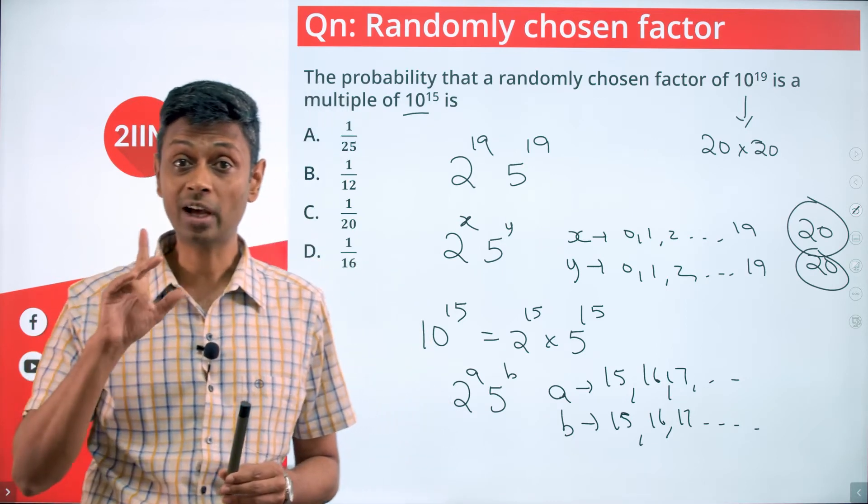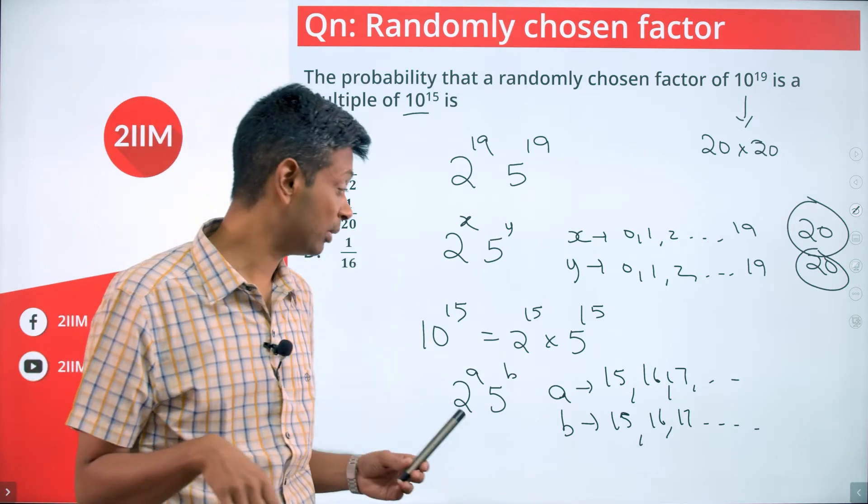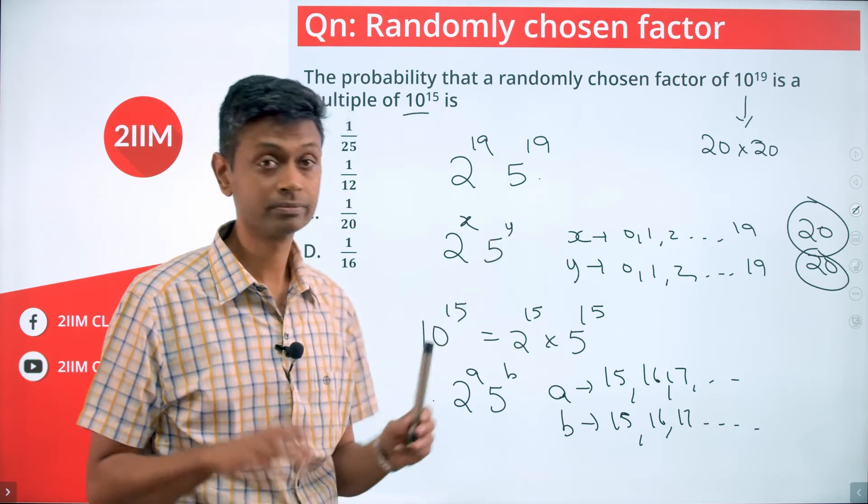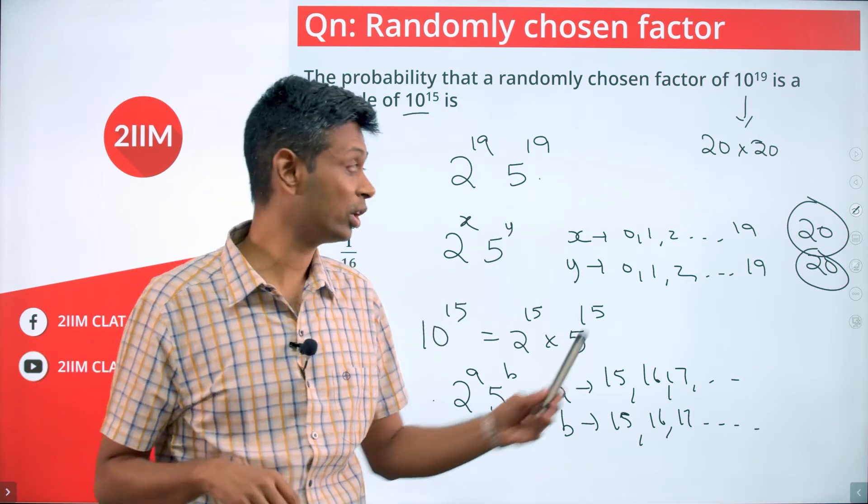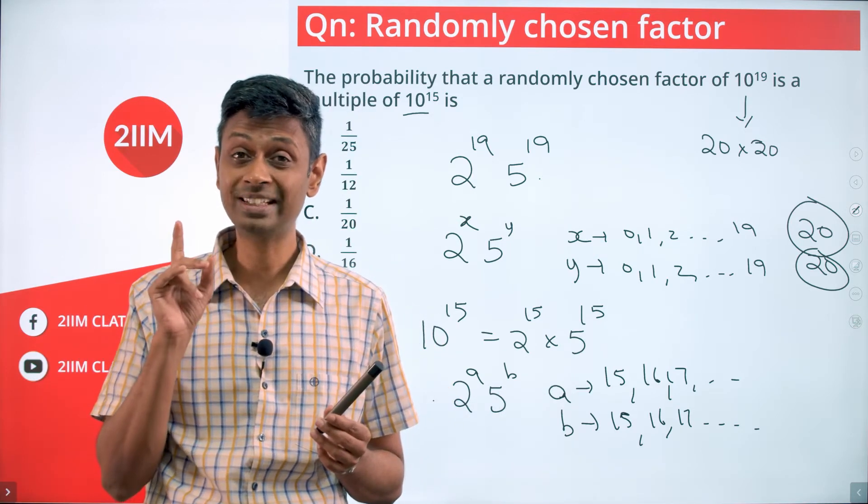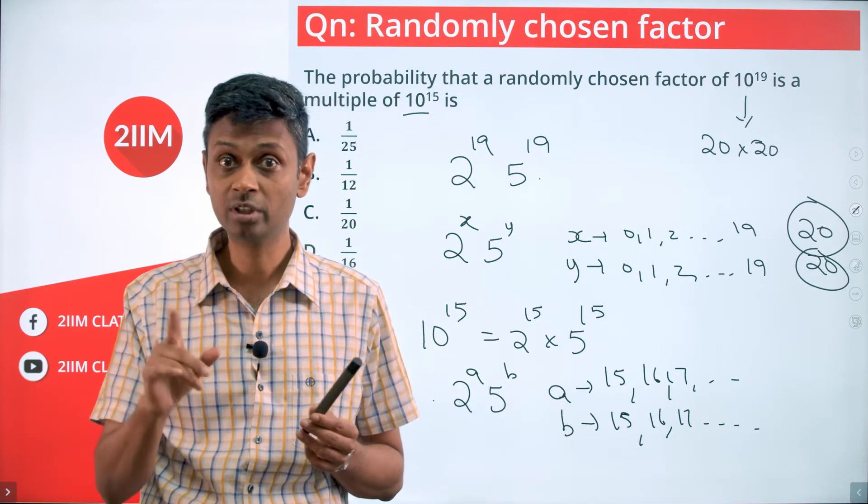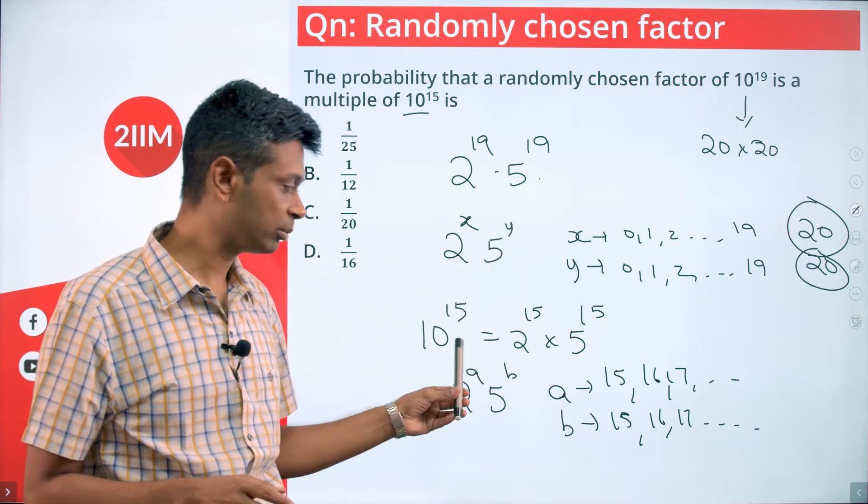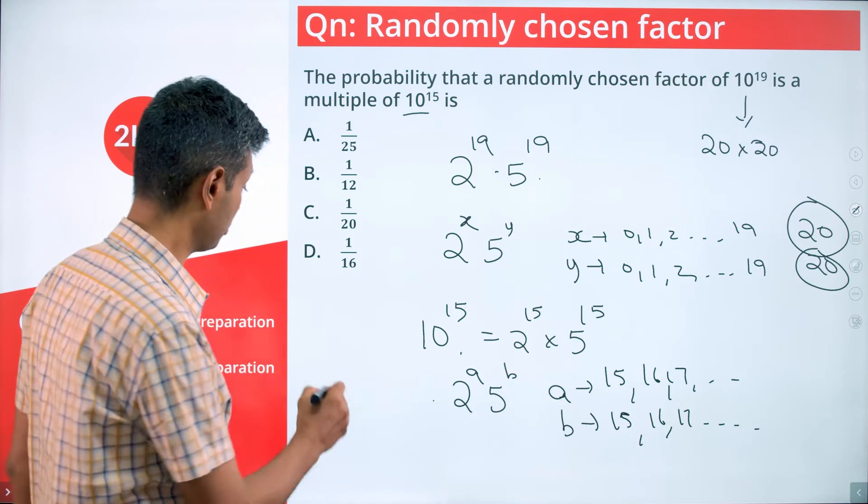Now comes the most interesting part. We want our number not only be a multiple of this but also be a factor of this. Totally there are 400 factors of this. Within that 400, we are thinking about the set of possible numbers which will not only happen to be a factor of this but also multiple of this.